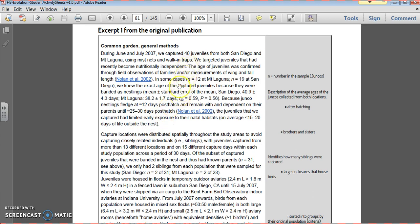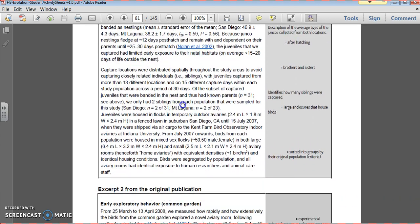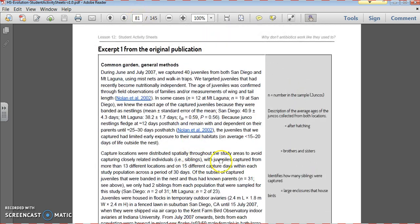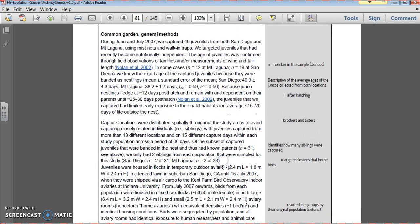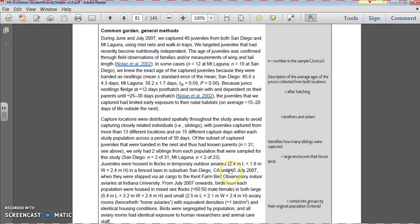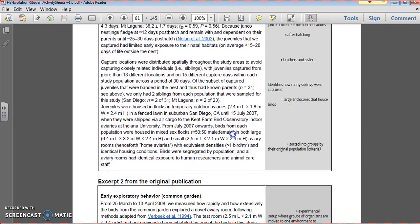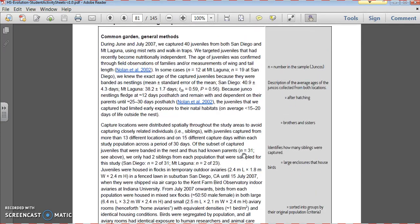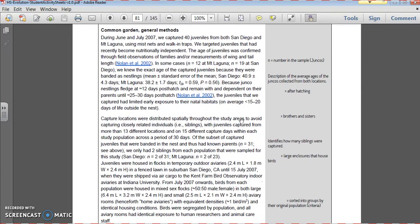So what I'd like you to do right now is go ahead and read this portion of the methods section. It's on page 81 of this file. Please read this. It's a little bit complicated, but just do your best to try to figure out what did this method actually look like. And then read excerpt 2 that says how they actually conducted the experiment with the juncos. Please do that before you go any further. You could even just read it right on the screen if you would like to. But read that before we go any further, and I'll tell you what to do next.